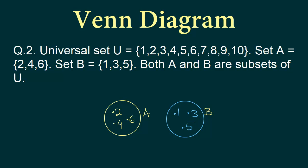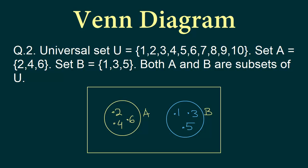Now we have to draw our universal set. We draw a rectangle around both circles — this is universal set U. U has 1 through 10, and 1, 2, 3, 4, 5, 6 are already covered inside the circles. The remaining elements are 7, 8, 9, and 10. We can arbitrarily place them outside the circles but inside the rectangle. This is a valid way to solve this particular question.